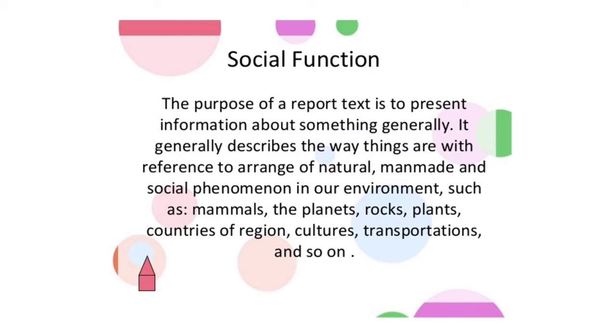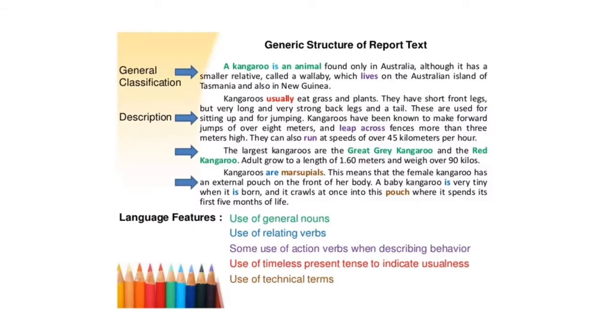Yang biasa dibahas itu contohnya mammals, the planets, rocks, plants, countries of region, cultures, transportations, and so on. Jadi mendeskripsikan secara umum bukan spesifik. Generic structure of report text itu ada dua: yang pertama general classification, the second is description.